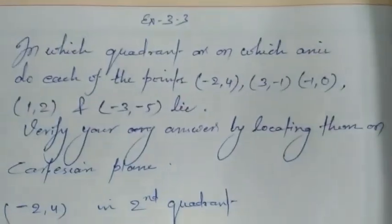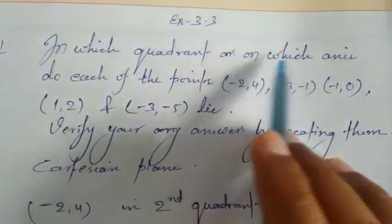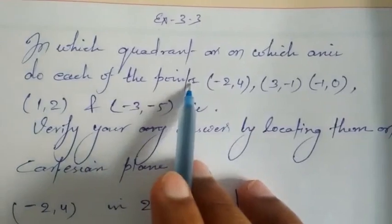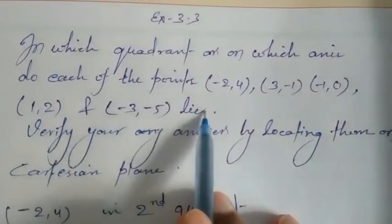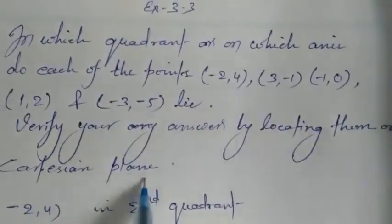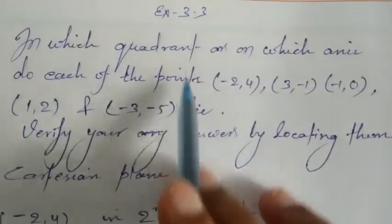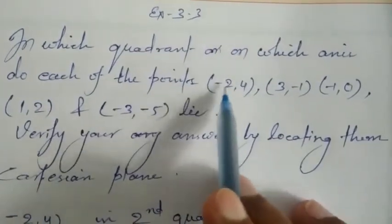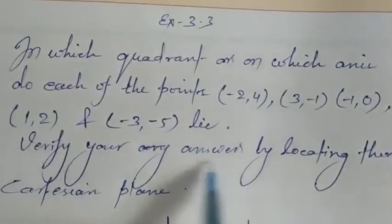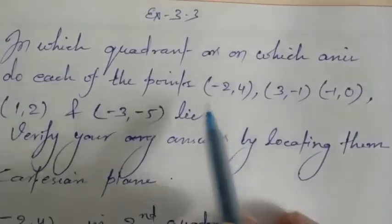Exercise 3.3 of coordinate geometry, question number one: in which quadrant or on which axis do each of the following points lie? Verify your answer by locating them on the Cartesian plane. If the question is asking only which quadrant these points lie in, you can give the direct answer, but since it also says to locate them on the plane, you will have to plot them.